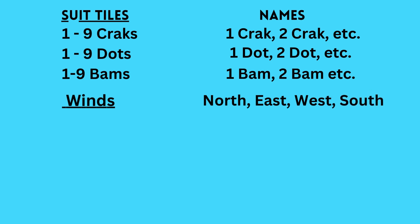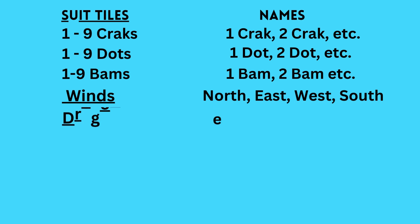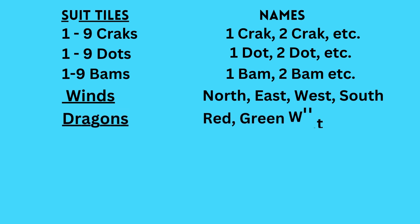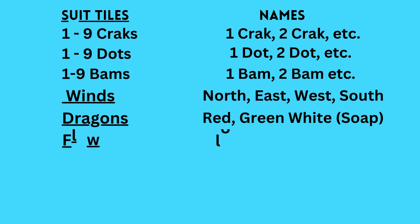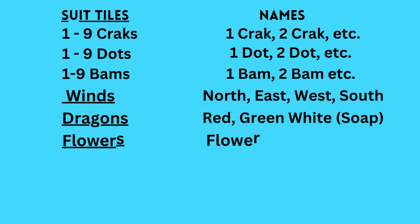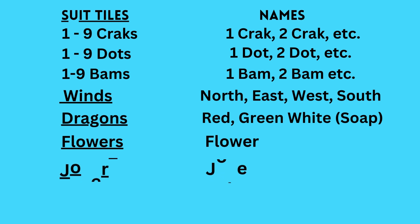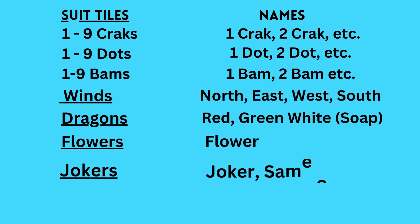The dragon tiles are named by their color, with the exception of the white dragon, which also can be named soap. So: red, green, white, or soap. And we have our flowers, which are named simply 'flower.' A flower is a flower is a flower — you do not add the number or season abbreviation on the tiles to name them. Lastly, we have our Jokers, and the Jokers can be named three ways: either 'joker,' 'same,' or the previously discarded tile. You'll learn more about this further on in the lesson.